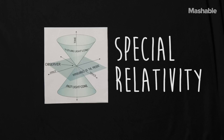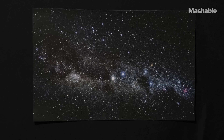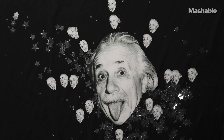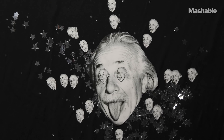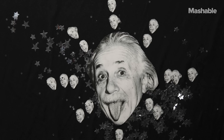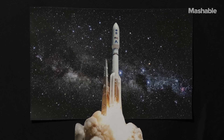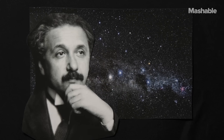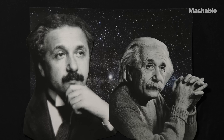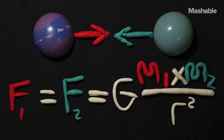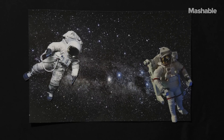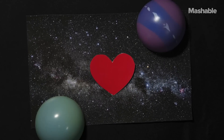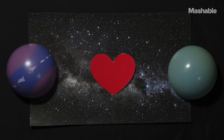Special relativity also helped us understand how light travels in a vacuum and how the laws of physics work in different frames of reference, which leads to all sorts of craziness, like the twin paradox. That's what happens when you get in a rocket and travel close to the speed of light and then come back to Earth and your twin is much older than you. Newton's law of universal gravitation tells us about how bodies in space are attracted to each other in a way that's proportional to their mass and the distance between them.